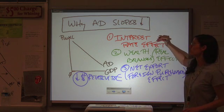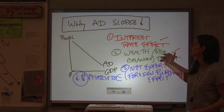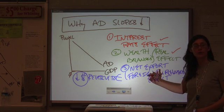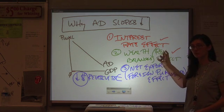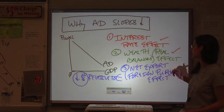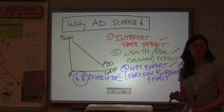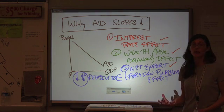Lower interest rate, higher spending. For the wealth effect, lower inflation, higher value of the dollar. It changes the value of your assets. If they're worth more, you spend more money. And with net exports, if we depreciate the dollar, then people end up buying more stuff.